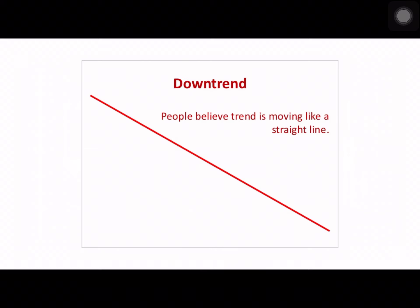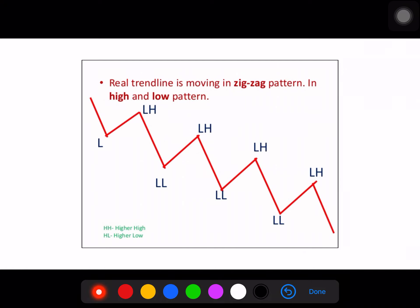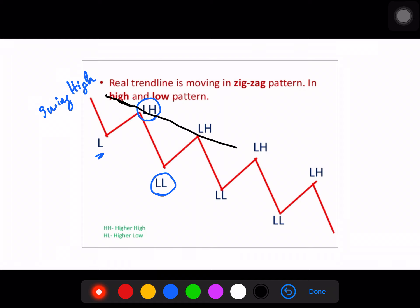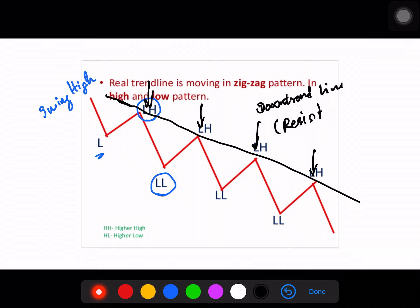If you want to trade a downtrend, you might want to identify a swing high or a swing low. You might want to be in a downtrend position. If you want to use a trend line, you can raise the price of a trend line. The downtrend line also acts as a resistance — a supply line area.